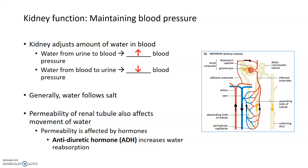Tubule permeability is affected by hormones. In particular, anti-diuretic hormone (ADH) helps increase water resorption back into the blood. A diuretic increases the volume of water in urine, making us urinate more; anti-diuretic hormone does the opposite — it increases water reabsorption back into the blood so there's less water in the urine. Overall, the permeability of the renal tubule is largely regulated by hormones.